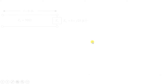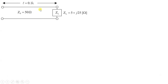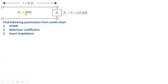Let us see the question. We have been given a transmission line with length 0.1 lambda. The characteristic impedance of this transmission line is 50 ohm and load impedance ZL is given as 5 plus J25 ohm. We need to identify VSWR, Reflection Coefficient, and Input Impedance.